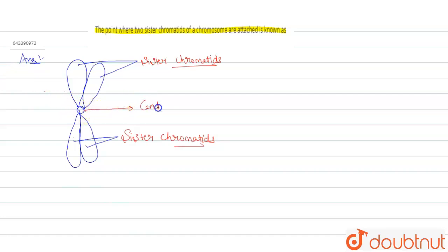Okay, on the centromere, a special disc-like protein is present. What is its name? Its name is the kinetochore. Through this kinetochore, spindle fibers are joined at the time of the cell cycle, or we can say cell division.